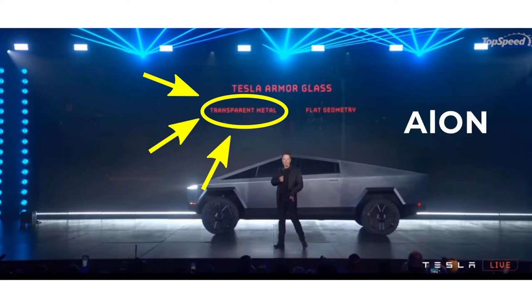My guess is that Tesla has built its windows out of laminated glass, except the glass layer is ALON instead of traditional glass. Here's why.